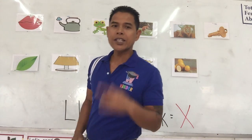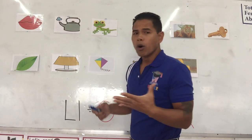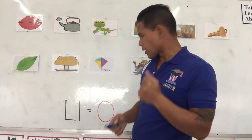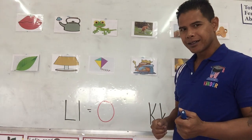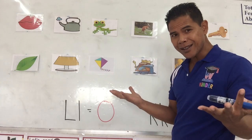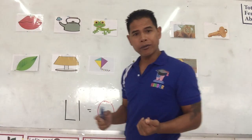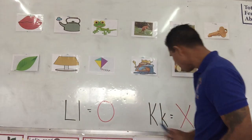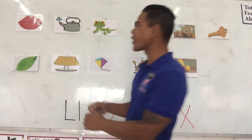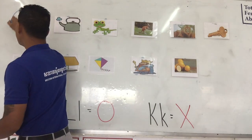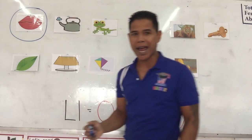First one is lips. Lips. Which letter? Is it letter L or letter K? Lips. Letter L? Excellent. So what do we do with it for letter L? We circle it or put an X? Yes, we circle it. We circle lips. Excellent job.